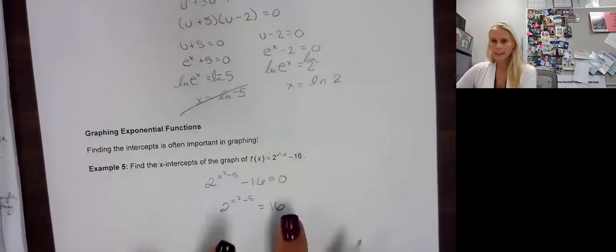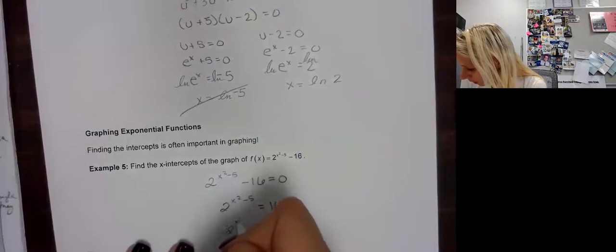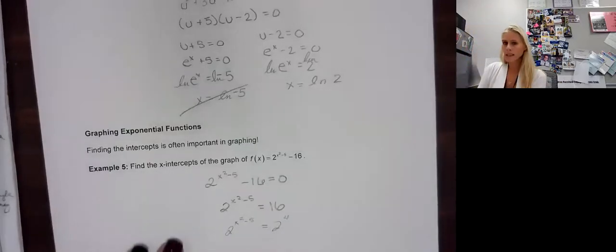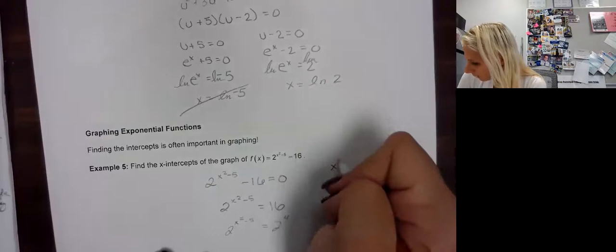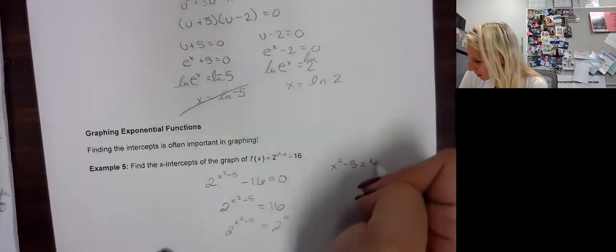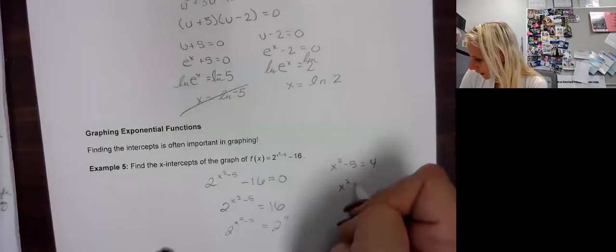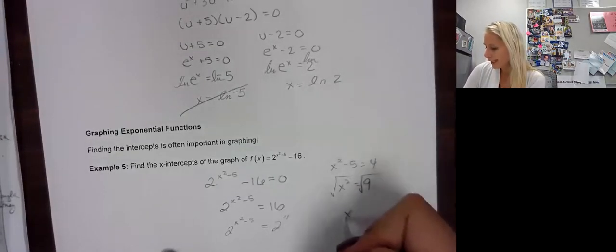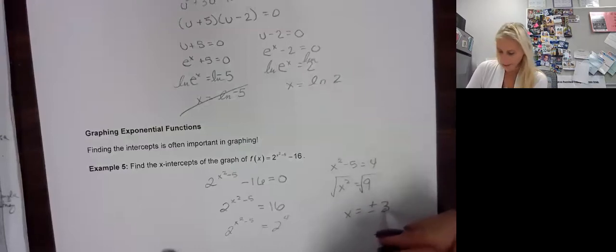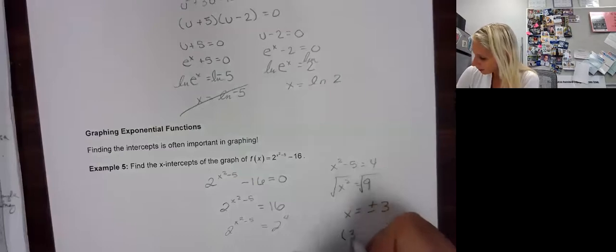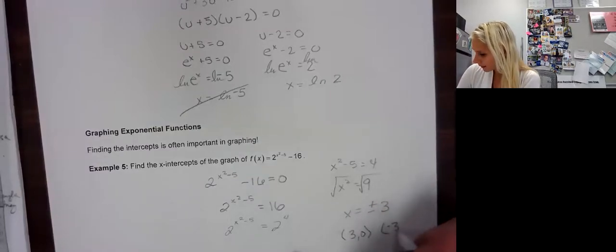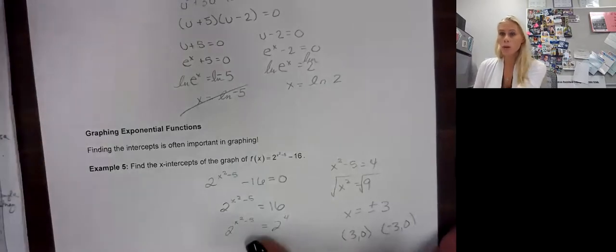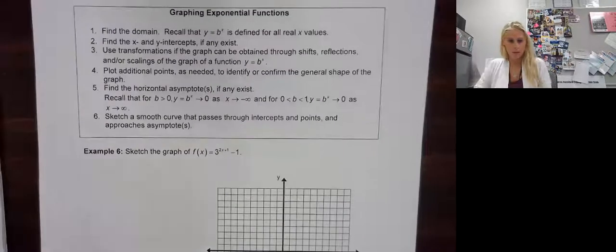Well, we can change the basis. Recognize that 16 is 2 to the 4th. This time we don't need to make it negative because it wasn't a fraction. Same basis means we can focus on the exponent. So x squared minus 5 equals 4. And solve. x squared equals 9. Be careful. Many of you guys forget this. When we take the square root, how many answers do we get? We get 2, plus or minus 3. So our x-intercepts are 3, 0 and negative 3, 0. This is the other part that people make a mistake on. X-intercepts are coordinate pairs. So you need to make them coordinate pairs.